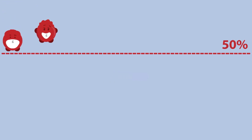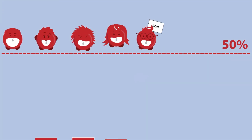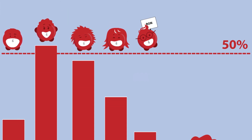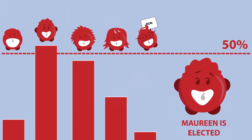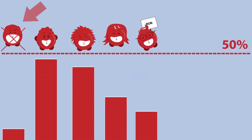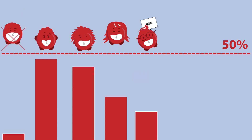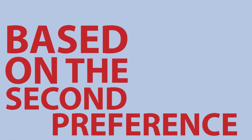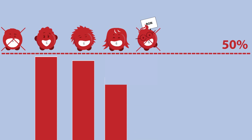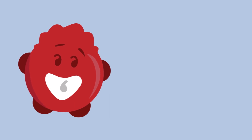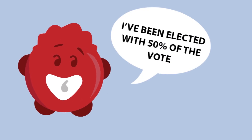Once voting has closed, the STV system introduces a 50% line. Everyone's first choice is counted, and if one of the candidates passes the 50% line, they are elected on the first round. If no one gets more than 50% of the vote, the candidate with the lowest number of votes is eliminated. Their votes are counted again, and redistributed based on the second preference. This process continues until one candidate crosses the 50% line, meaning whichever candidate is elected has at least 50% of the votes.